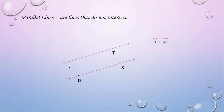Then we have parallel lines. Parallel lines are lines that do not intersect. These two lines — line JT is parallel to line DS.